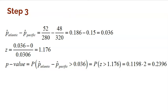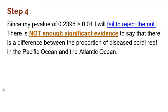All you have to focus on is using that p-value of 0.24 to make an appropriate conclusion. And this is where I will fail to reject the null. That p-value is way too much bigger than any significance level, either 0.01 or 0.05. So there is not enough significant evidence to say that there is a difference between the proportion of diseased coral reef in the Pacific Ocean and the Atlantic Ocean.